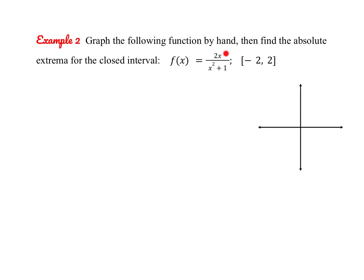Let's try the next example: a rational function. There's no way to simplify it and no holes. Looking for vertical asymptotes, the denominator x squared plus 1 never equals zero — setting it to zero gives x squared equals negative 1, which has no real solutions — so there are no vertical asymptotes. Comparing the degree of the numerator to the denominator, we have a horizontal asymptote at y equals zero.